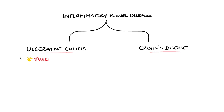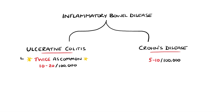Ulcerative colitis is thought to be twice as common as Crohn's disease, with incidence rates of 10-20 per 100,000 per year, compared to 5-10 per 100,000 per year in Crohn's disease.